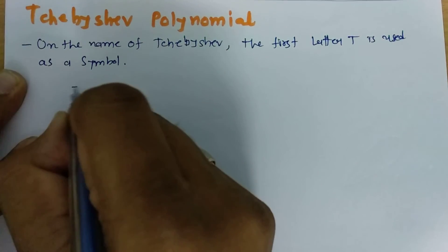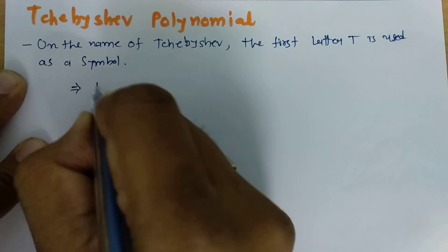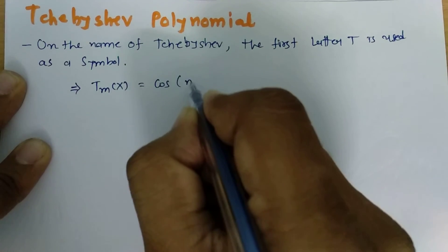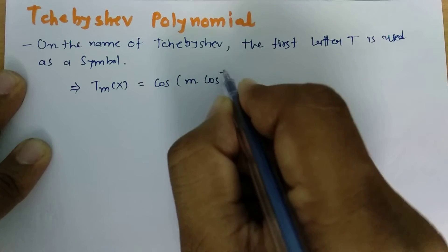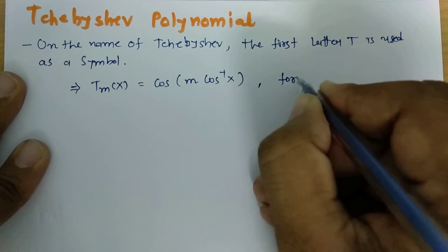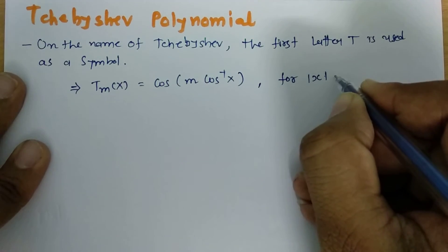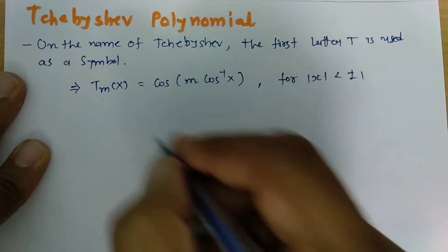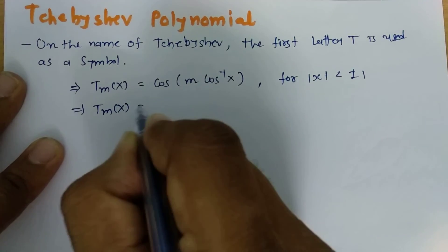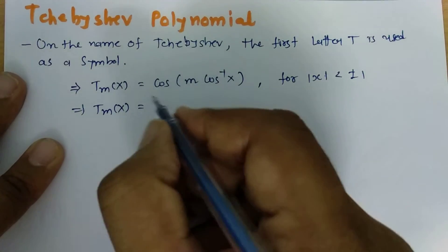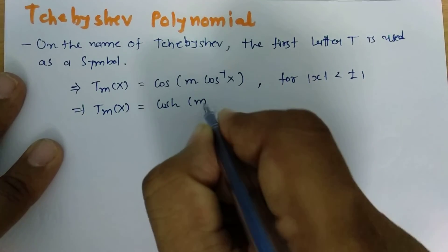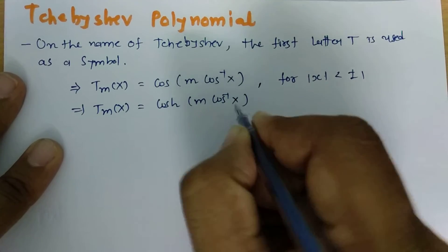Basically, in Chebyshev Polynomial, Tm of x equals cos of m times cos inverse of x. This is the case for x less than or equal to plus or minus 1. And if x is greater than plus or minus 1, then the Chebyshev polynomial will be cosh of m times cos inverse of x.